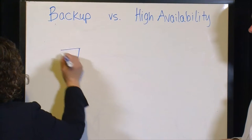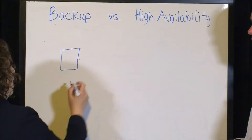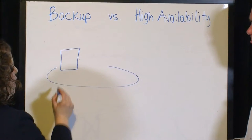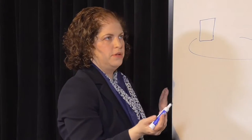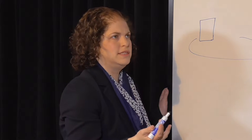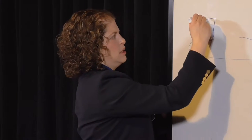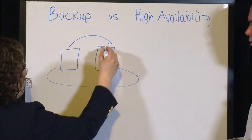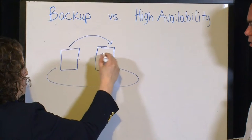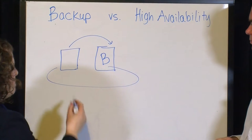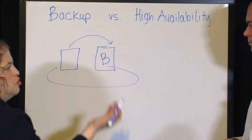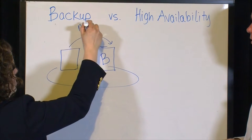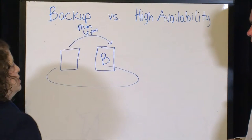Let's say you have a server in your data center. Usually, people take a backup of those servers typically once a day. They're using some sort of snapshot technology to create a copy of that server, often on premise. That happens usually after close of business, so let's say 6 p.m. — let's call it Monday at 6 p.m.